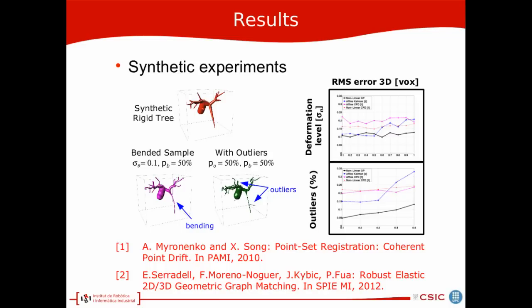And we compare the performance of our algorithm, first to a point cloud registration algorithm, like the state-of-the-art Coherent Point Drift, and then with the previous version of our algorithm, where we are using a parametric model with an affine transformation.